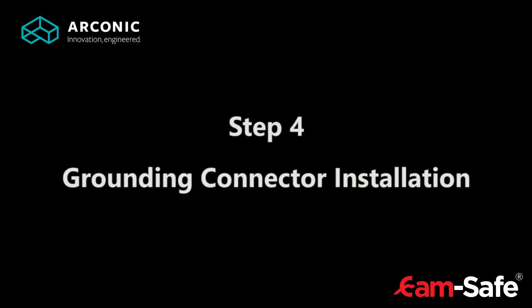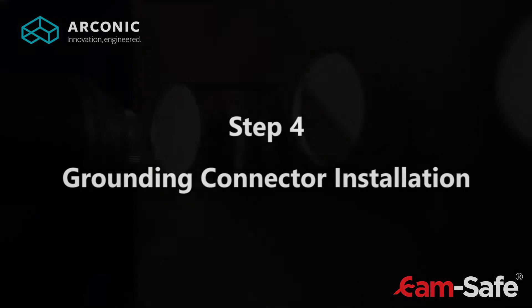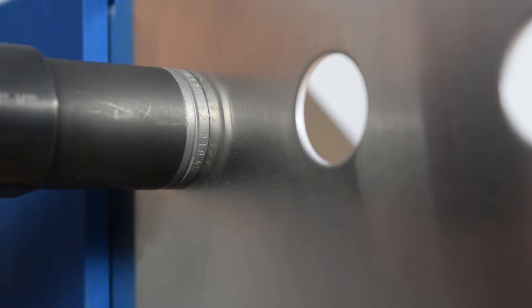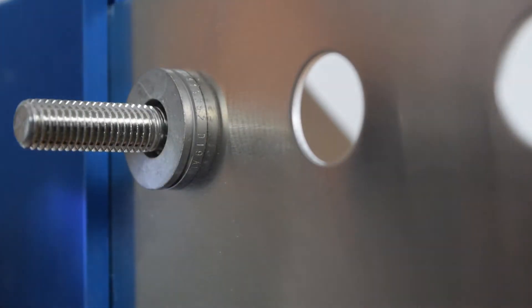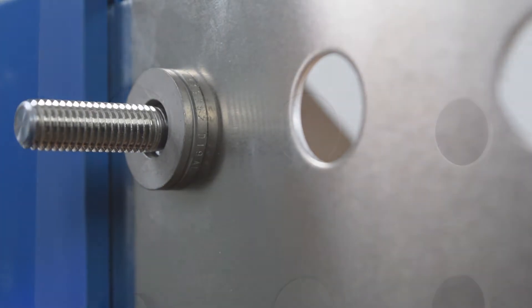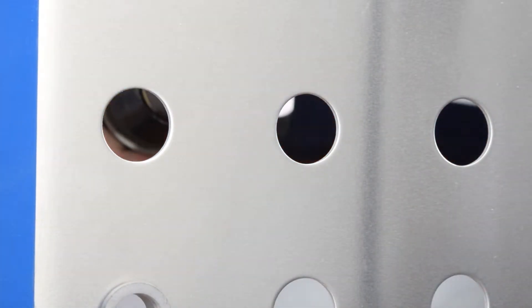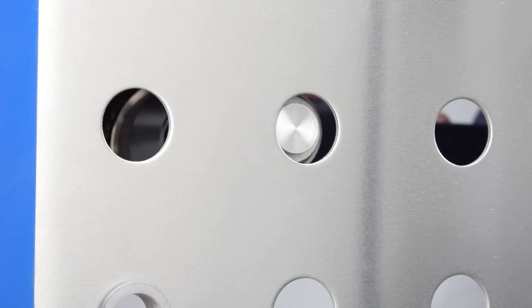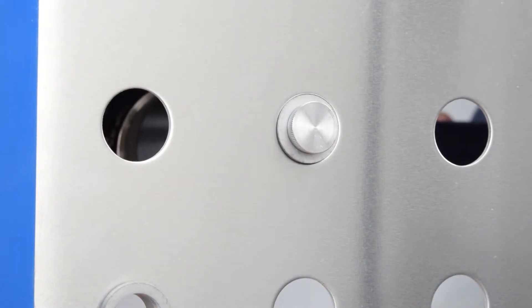Step 4: Grounding connection installation. Insert the connector into the prepared hole. Make sure to install the connector flush to the workpiece. Press the trigger until the tool has been removed from the connector.